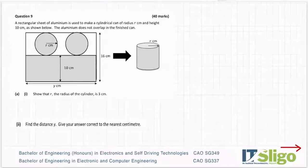Question 9. A rectangular sheet of aluminium is used to make a cylindrical can of radius r centimetres and height 10 centimetres as shown below. The aluminium does not overlap in the finished can. Show that the radius of the cylinder is 3 centimetres.